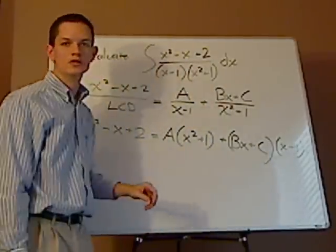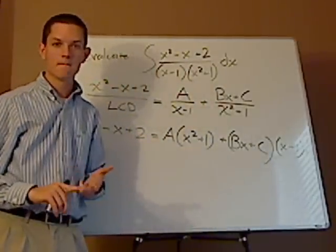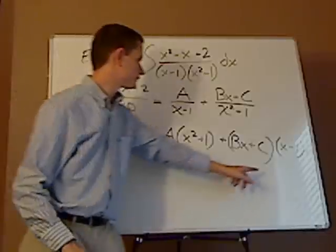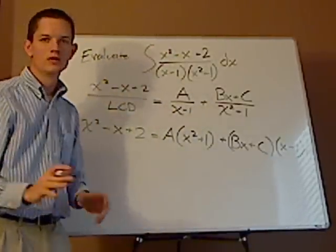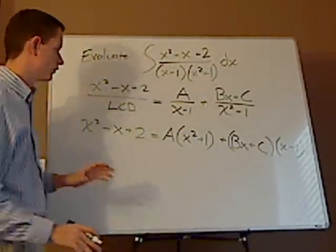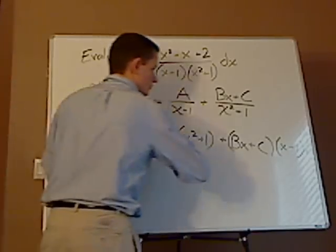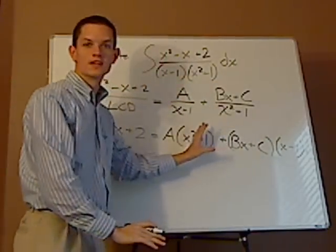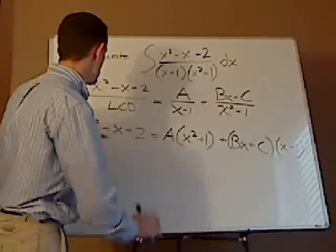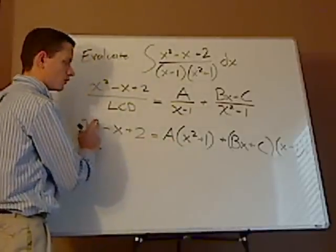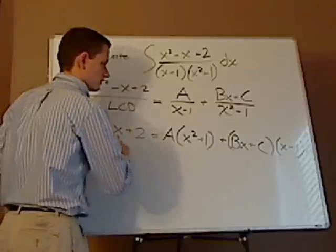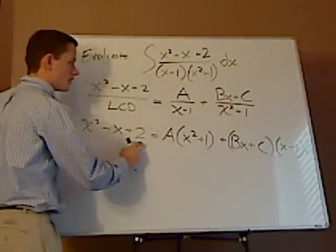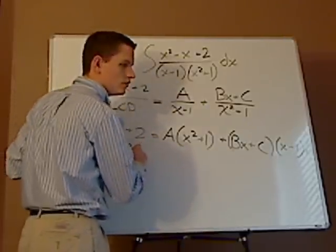Now what we have to do is solve for a, b, and c. Now there's two ways to go about doing this. One way is to simply factor all of this out. If you factor all of it out, you can line up the x squares. You have one equation there, all the x's, and then all the constants.